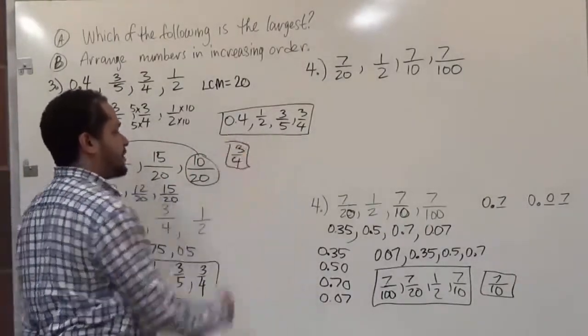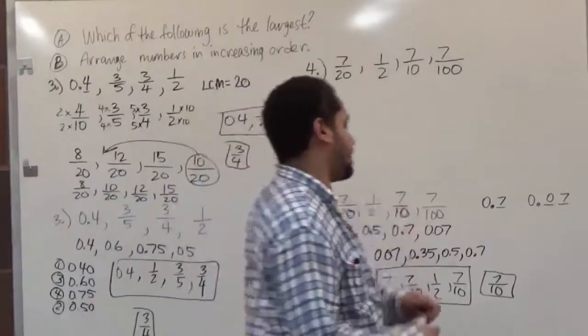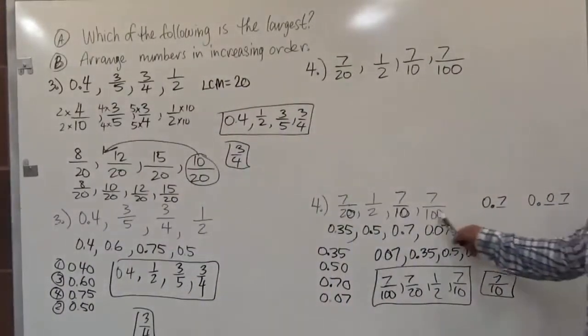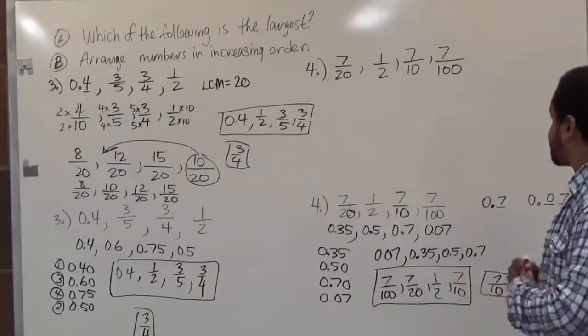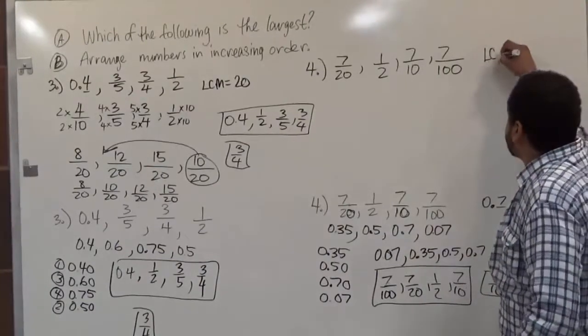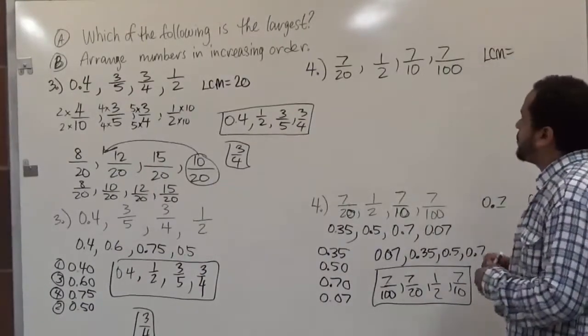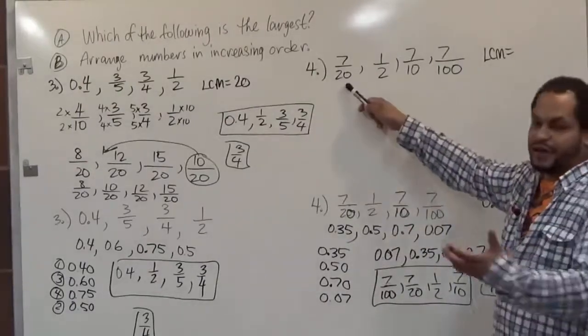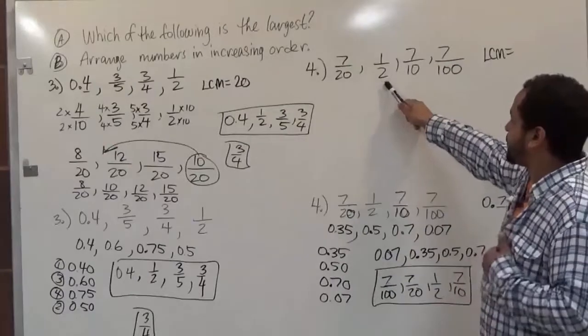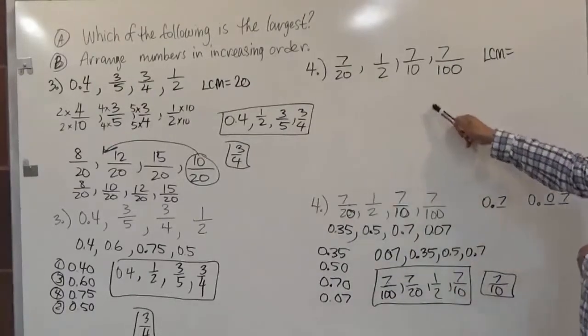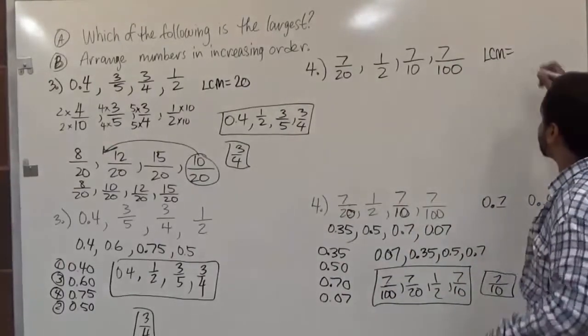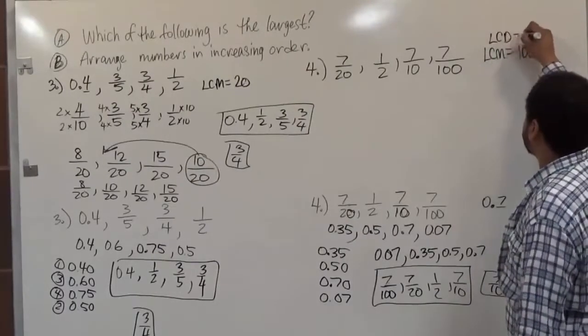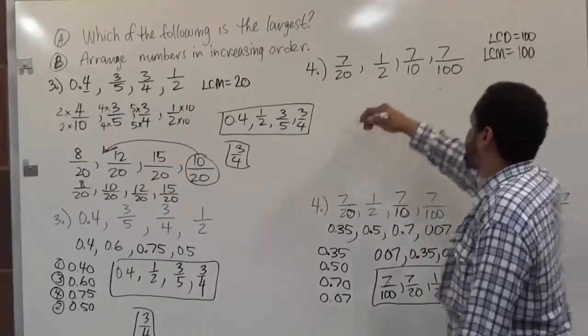Now we can do the same thing with these. All of these have denominators already and they're all fractions, but what they don't have is the common multiple as the denominator. So what's the least common multiple for these numbers? Well, all these numbers can probably make 100. 20 times 5 is 100, 2 times 50 is 100, 10 times 10 is 100, and 100 times 1 is 100. So we know our least common multiple is 100. This is also our LCD, which is 100. So let's make that LCD work for everyone.